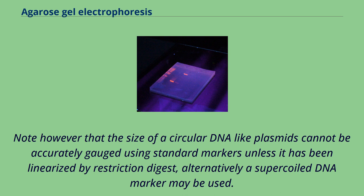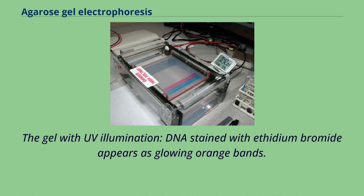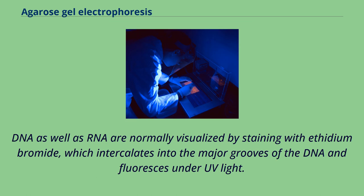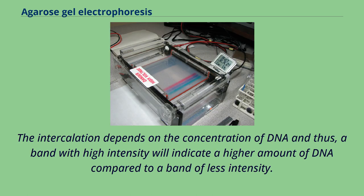DNA as well as RNA are normally visualized by staining with ethidium bromide, which intercalates into the major grooves of the DNA and fluoresces under UV light. The intercalation depends on the concentration of DNA, so a band with high intensity indicates a higher amount of DNA compared to a band of lesser intensity. Ethidium bromide may be added to the agarose solution before it gels, or the DNA gel may be stained after electrophoresis.